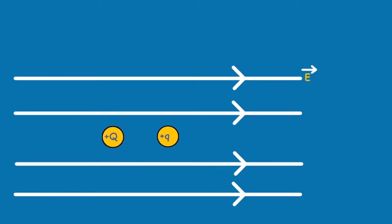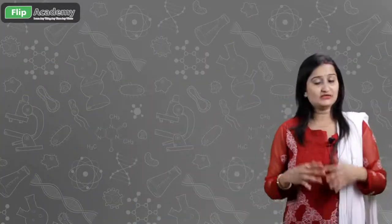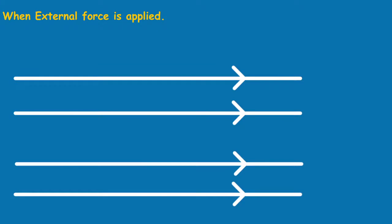both charges have a tendency to repel each other because both are positive in nature. The source charge Q repels the test positive charge, and this repulsion occurs by the electrostatic repulsive force, denoted by FE. In this condition, if an external force — represented by F_ext — is applied on the test positive charge such that it overpowers FE and moves from point A towards point B.